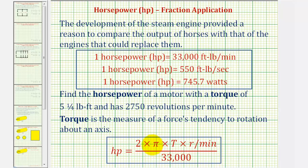So for this example, we're going to use an approximation for pi. Remember, pi is an irrational number. We'll use pi is approximately equal to 22-sevenths for our calculation. The torque, capital T, is going to be five and one-fourth pound-feet. And the revolutions per minute will be 2750. Let's set this up on the next slide.